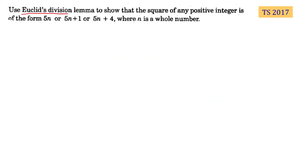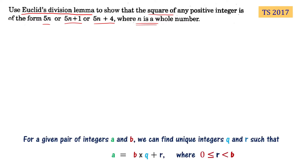Use Euclid's division lemma to show that the square of any positive integer is of the form 5n or 5n plus 1 or 5n plus 4, where n is a whole number. First of all, let's recall Euclid's division lemma: for a given pair of integers a and b, we can find unique integers q and r such that a equals b times q plus r, where r is greater than or equal to 0 and less than b.